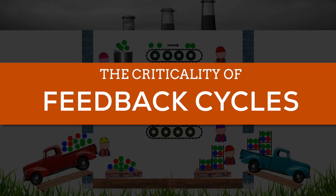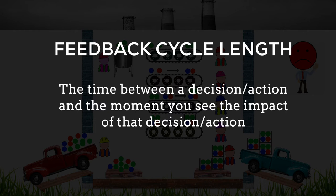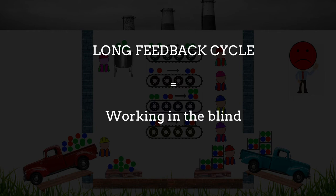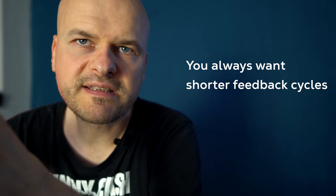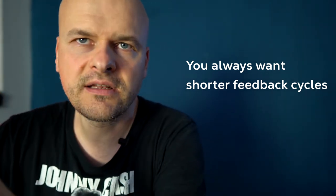We can start talking about Lean by talking about feedback cycles — how you design them, put them in place, and learn from them. If a client calls about a defective product and you realize the problem is from a batch ordered a month ago, your feedback cycle is one month long. A month passed from the action — ordering those balls — until you faced the consequences. Feedback cycles apply to everything: if you write code for six months before launching, you have a six-month feedback cycle. You always want to shorten the feedback cycle — you want as little time and as little risk as possible to accumulate between your actions and the feedback you get.